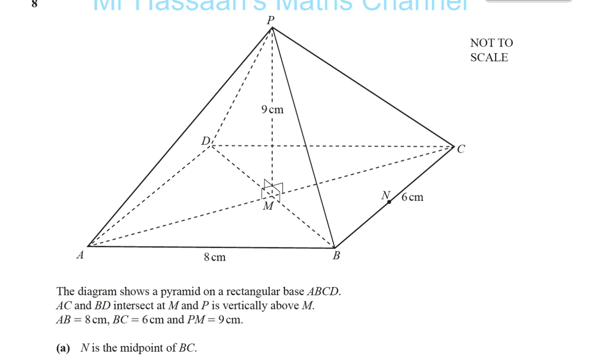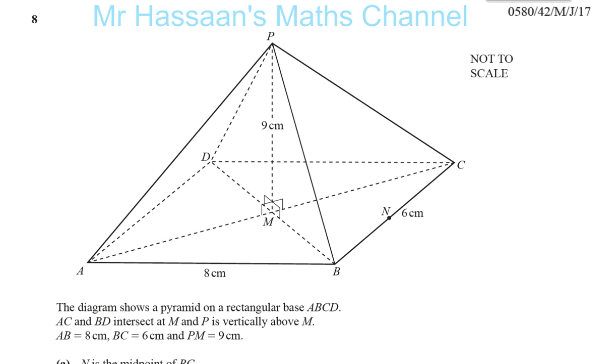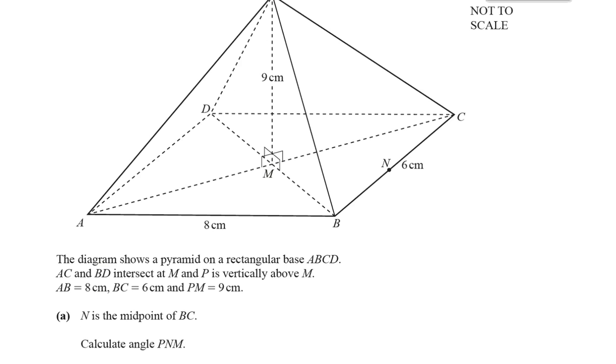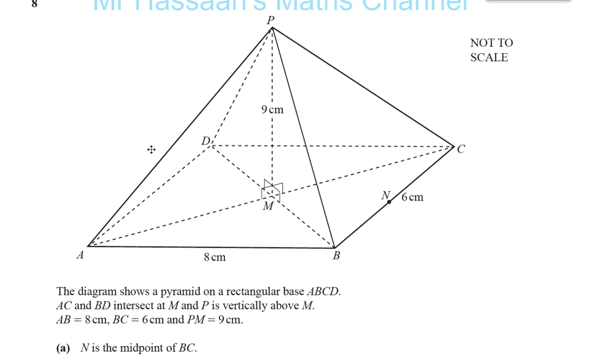We're asked to find... We're told that there's a pyramid with a rectangular base ABCD. AC and BD intersect at M, and P is vertically above M. AB is 8 cm, BC is 6 cm, and PM is 9 cm. N is the midpoint of BC.